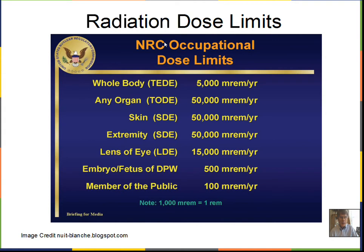The Nuclear Regulatory Commission sets occupational limits: 5,000 millirems (5 REMs) per year for whole-body exposure, with different limits for specific organs, the skin, and extremities. The eyes are sensitive to radiation and can develop cataracts, so a lower limit is set for the front of the eye. A fetus, growing rapidly with frequently dividing cells, is more susceptible to radiation damage — so the limit is 0.5 REMs (500 millirems) per year.